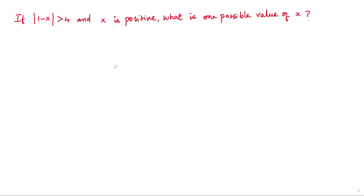Here we have a SAT math problem. Let's go over the question. If the absolute value of one minus x is greater than 4, and x is positive, what is one possible value of x?